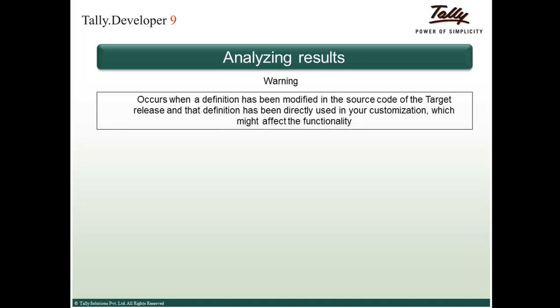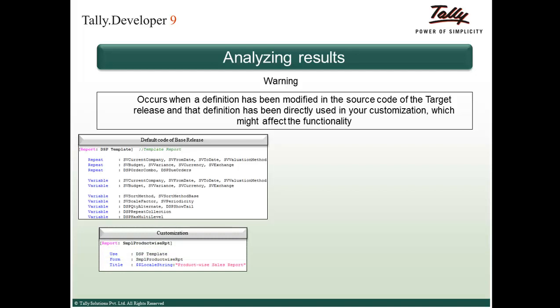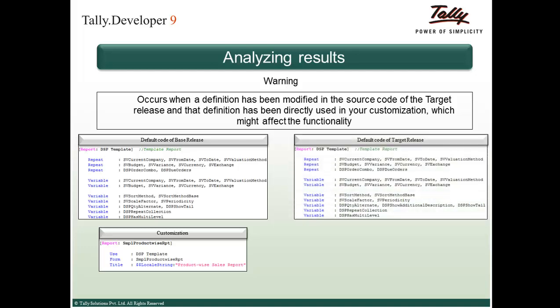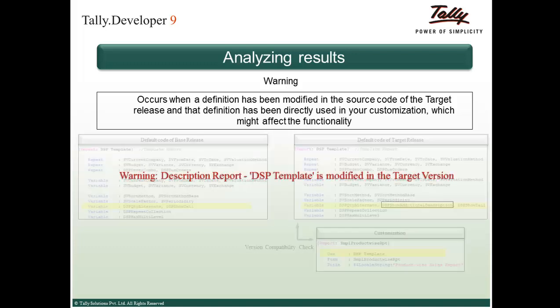The next type of result is a warning, which occurs when a definition has been modified in the source code of the target release and that definition has been directly used in your customization, which might affect functionality. For example, in the base release 4.8, the widely used report definition DSP Template is used in the customization report SMPL ProductWise RPT. When a variable 'DSP show additional description' is added to the report DSP Template in the target release, the warning 'Description report DSP Template is modified in the target version' is displayed.